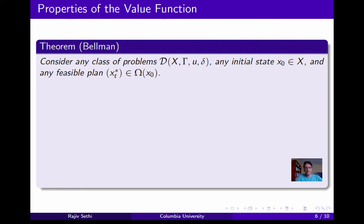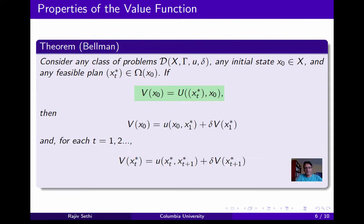We'll now state and prove the main result. Consider any class of problems D defined by x, gamma, U, and delta, any initial state x0, and any feasible plan x* in omega of x0. If V(x0) equals the payoff obtained by following x*t starting from x0, then x*t must be an optimal plan. In this case, we can express V(xt) recursively: V(x0) = U(x0, x1*) + delta·V(x1*), and for every subsequent period t, V(xt*) = U(xt*, xt+1*) + delta·V(xt+1*). Furthermore, if u is bounded, then the converse holds: if the value function can be expressed in this recursive form for some feasible plan x*, then that plan is in fact optimal.